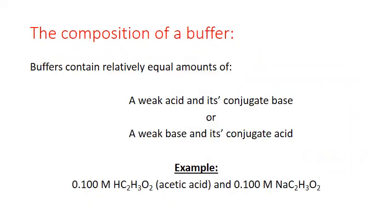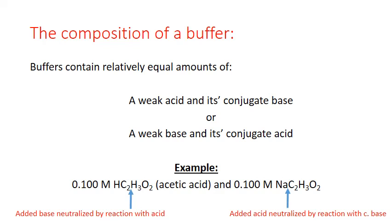A buffer works this way because it's composed of relatively equal amounts of either a weak acid and its conjugate base, or a weak base and its conjugate acid. For example, a buffer could be composed of a 0.1 molar acetic acid solution combined with a 0.1 molar solution of the salt, sodium acetate. If extra base is added, it'll be neutralized by the weak acid present. And if extra acid is added, it'll be neutralized by reaction with the conjugate base. Because these are weak acids and bases and they are conjugates of each other, the opposing equilibrium helps maintain relatively equal concentrations and relatively consistent pHs.